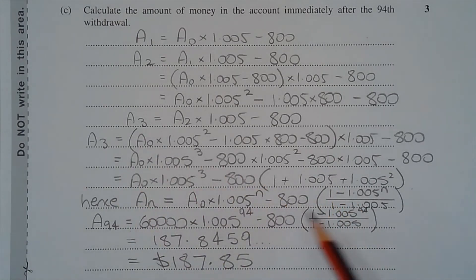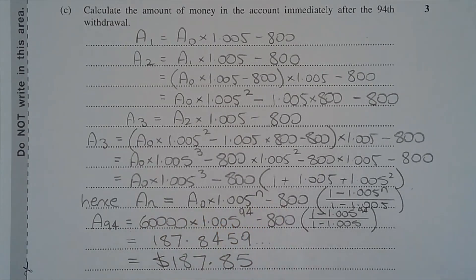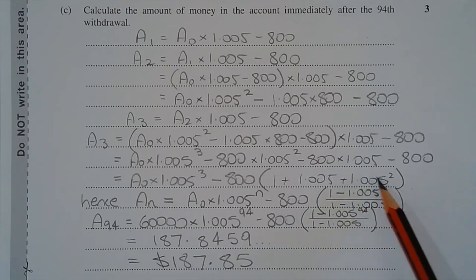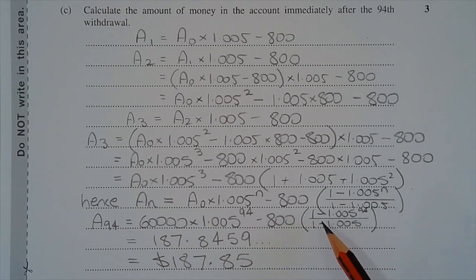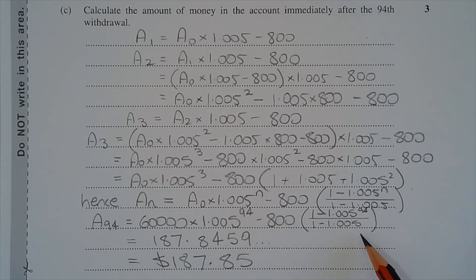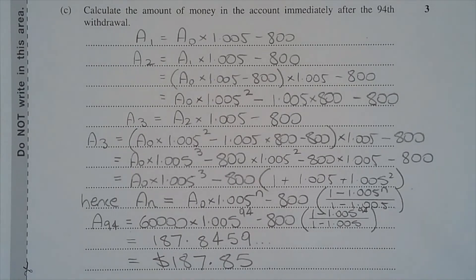Generalizing, An equals A0 multiplied by 1.005 to the power of n, minus 800 multiplied by the quantity 1 minus 1.005 to the power of n, all over 1 minus 1.005 — which is the sum to n terms of the geometric progression. So A94 equals 60,000 multiplied by 1.005 to the power of 94, minus 800 multiplied by 1 minus 1.005 to the power of 94, all over 1 minus 1.005, and that equals $187.85.